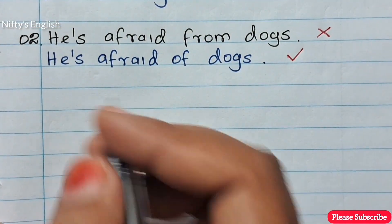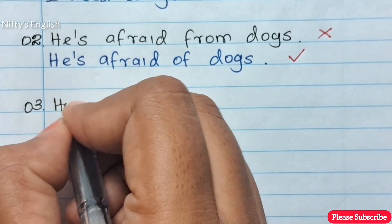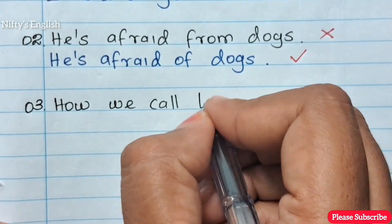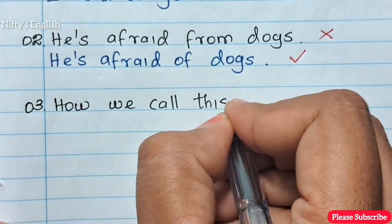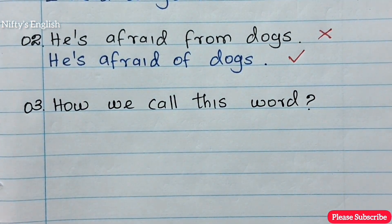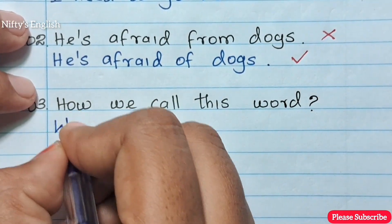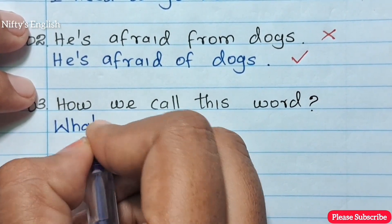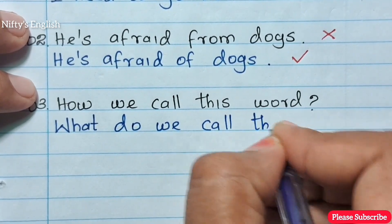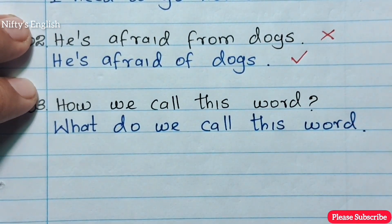Number three: 'How we call this word' is the wrong sentence. 'What do we call this word' is the right sentence.